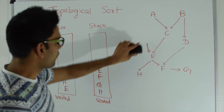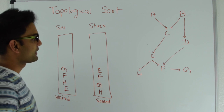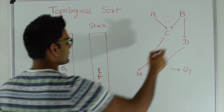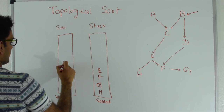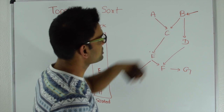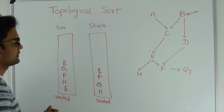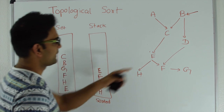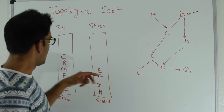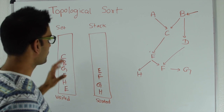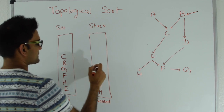We pick another unvisited vertex — let's say b. We put b into the visited set and explore its children. We pick child c first. C is not in the visited set, so we put c in and explore c's children. C has one child e, and e is already in the visited set, so we do nothing. C has no other children, so we put c into the stack.